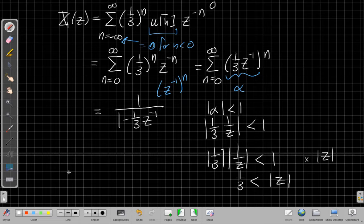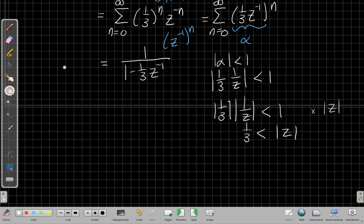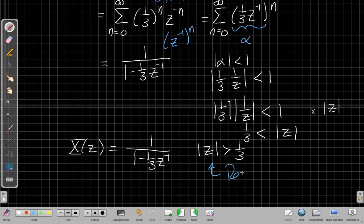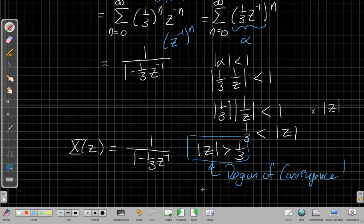So whenever I write a Z-transform, I want you to build the right habits right from the start. When I write my answer, it's not enough just to say it's 1/(1 - 1/3 Z⁻¹). You always have to include the region of convergence. The values of Z where that infinite sum converged. We call this whole thing, this inequality, the region of convergence. And no Z-transform is complete without it. Okay? So very important. In fact, I probably should have written it in red rather than blue.